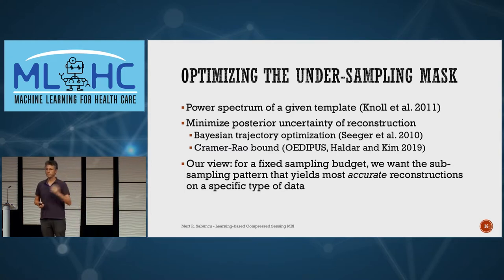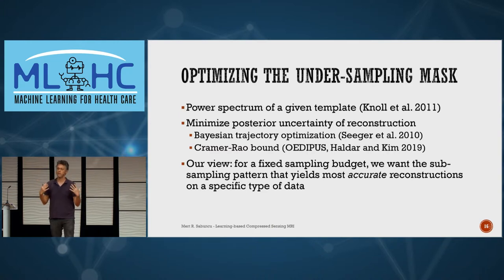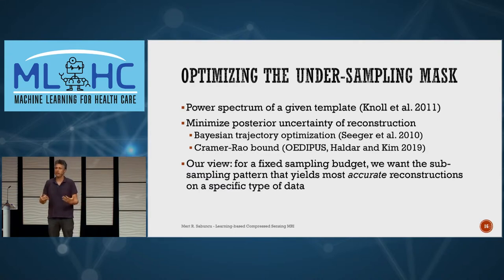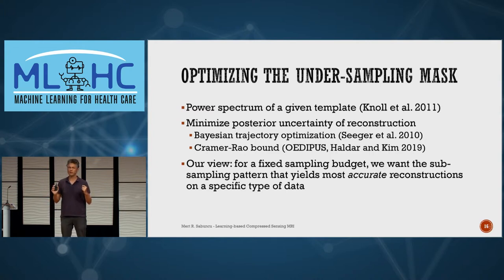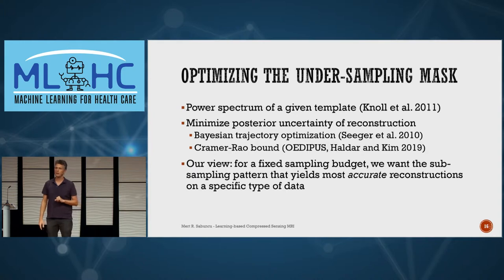Our view is that it doesn't make sense to be agnostic about the reconstruction method, because there's a tight link between the reconstruction method and where you undersample. The only thing we really care about is the quality of the reconstruction x. Uncertainty and power are secondary proxy loss functions. That said, 'quality of reconstruction' is loaded — there are many ways to measure it — but we can hopefully agree on various metrics.